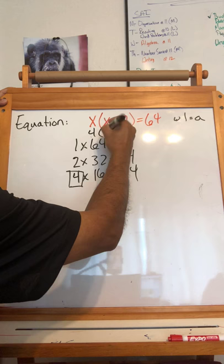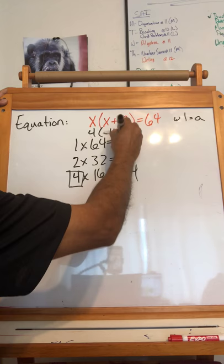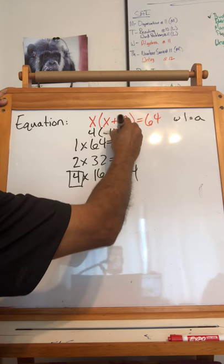But 4 times, or plus 12 is, oops, let me just do, 4 plus 12 is 16, equals 64. I hope that made sense, but that's pretty much it. All right? Okay, bye.